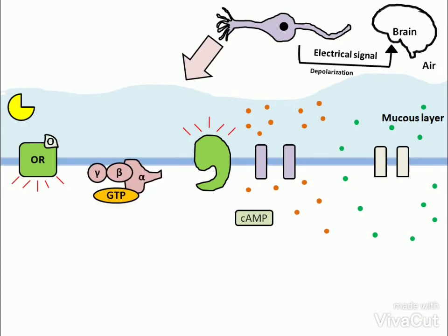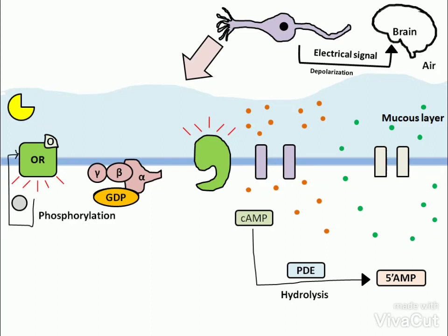cAMP is hydrolyzed by PDE to 5'-AMP. The receptor kinase phosphorylates the active odorant receptor to inactivate it.